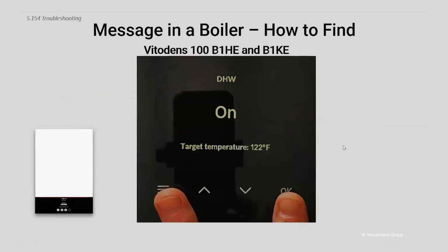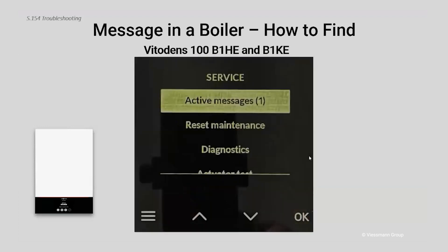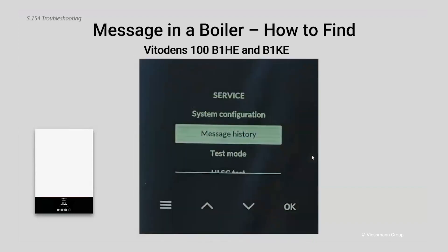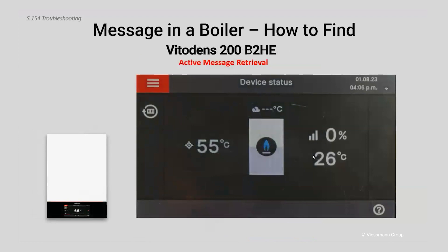The second way to navigate through the 100 boilers is to make a 'V' with your fingers — or a peace sign — and put them across the OK and menu keys, holding both buttons down. After a few seconds the screen will flip to the service screen. If you see 'active message' highlighted at the very top, that means there's an active message currently on the boiler that needs to be addressed. Hit OK to see what that message is, or scroll down to message history to view archived messages.